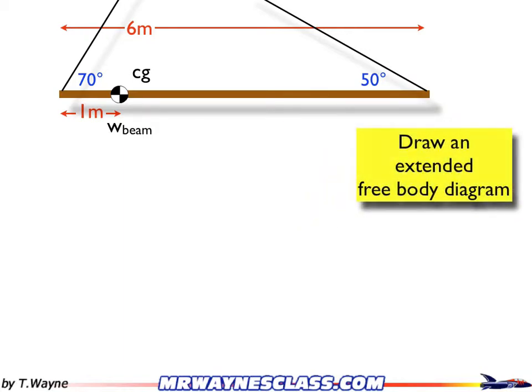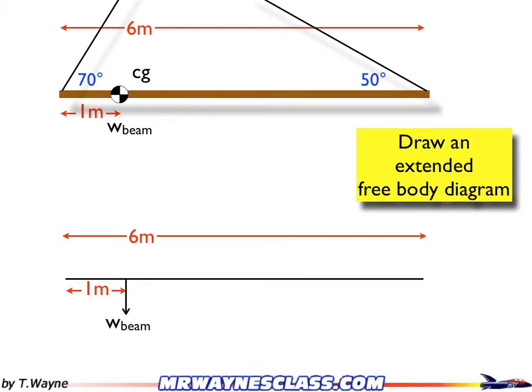To begin with, to solve this problem, I'm going to draw an extended free-body diagram. So I'll start with a stick, instead of a dot for the body, and I'll put the forces at the right locations. So the stick is 6 meters long. Now, when drawing an extended free-body diagram, you need to include distance and force. So 1 meter at the weight of the beam.